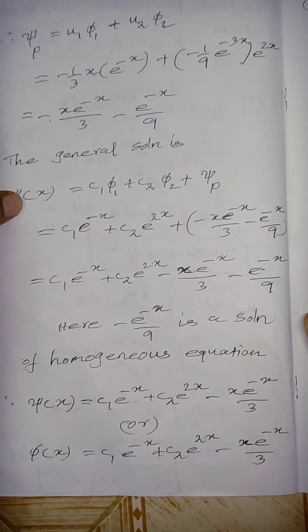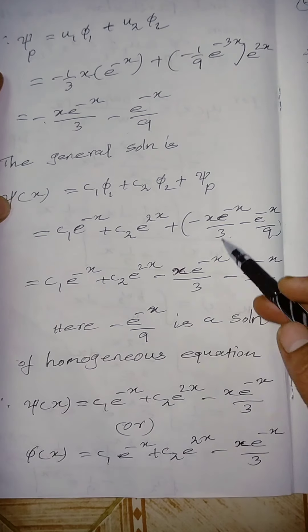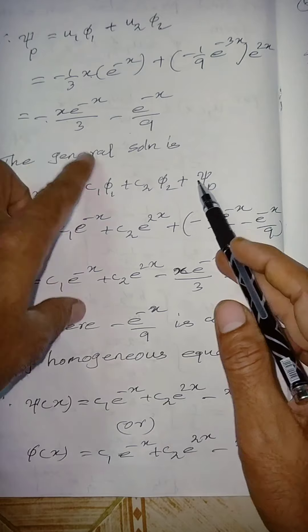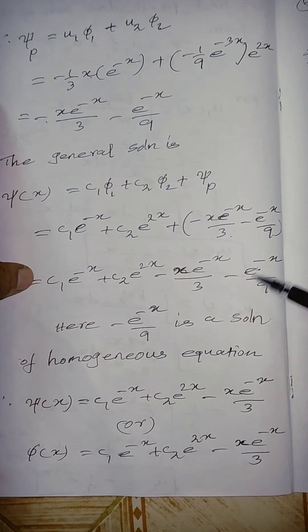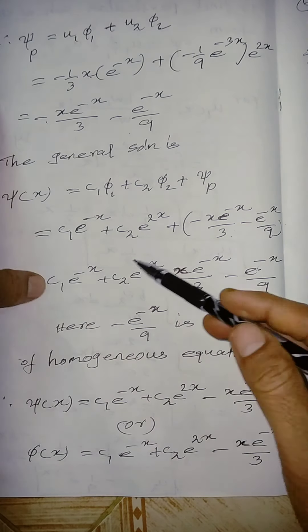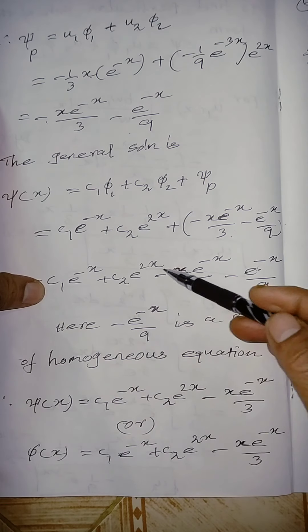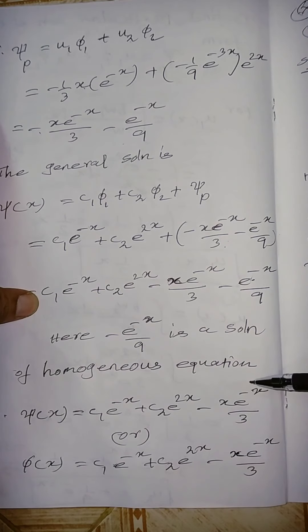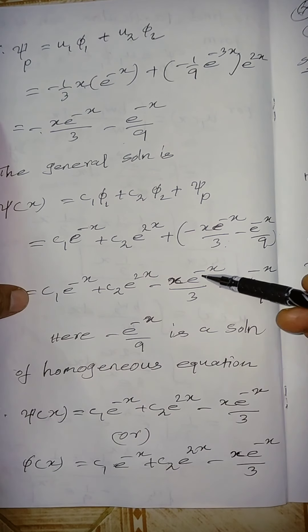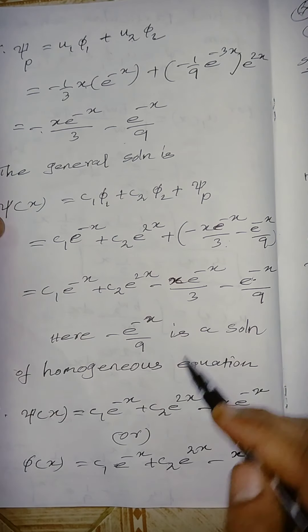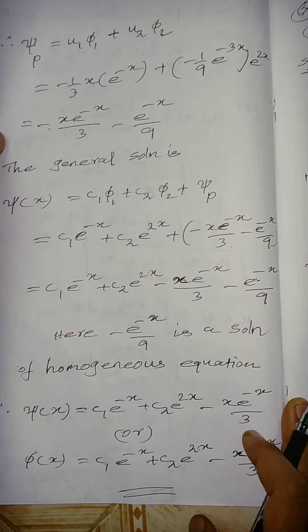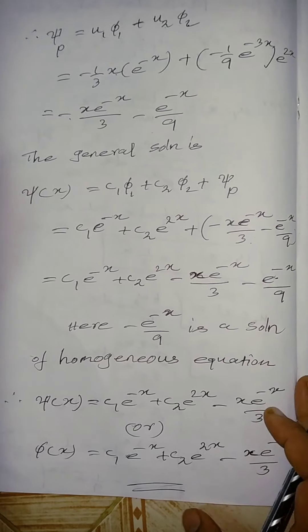The final general solution is ψ(x) = c₁e^(−x) + c₂e^(2x) − xe^(−x)/3. This completes the first problem.